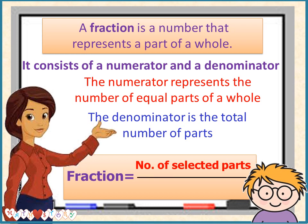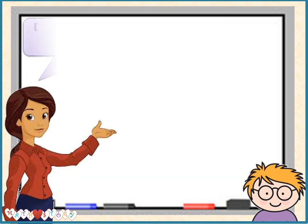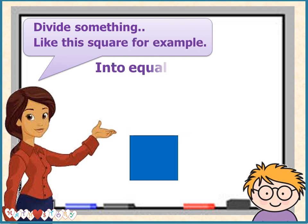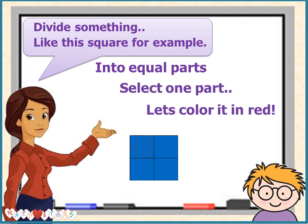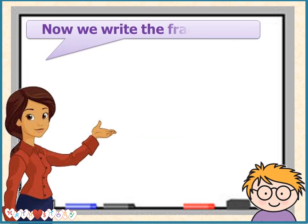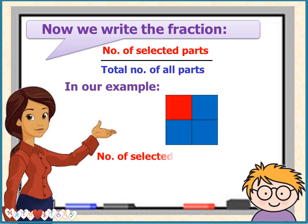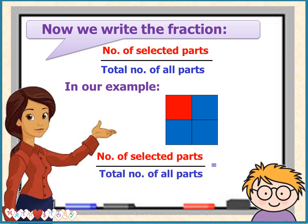Fraction equals number of selected parts over total number of parts. Divide something — like this square, for example — into equal parts. Select one part and let's color it in red. Now we write the fraction: number of selected parts over total number of parts.